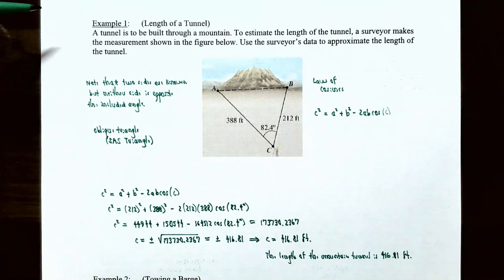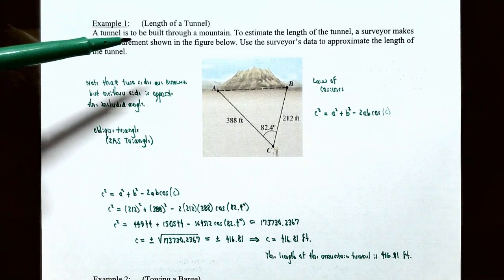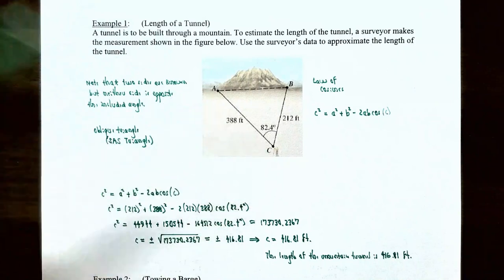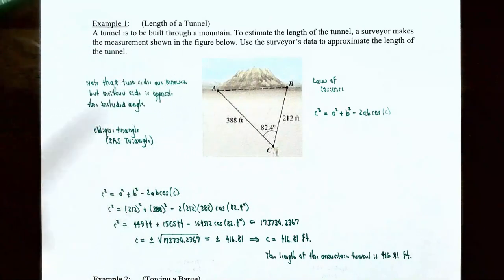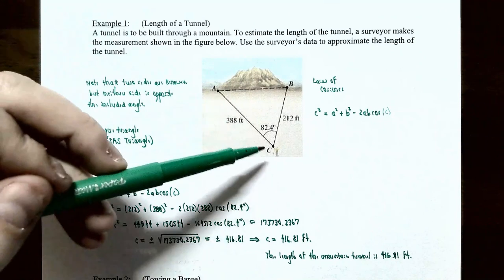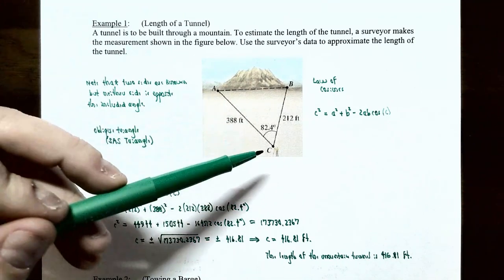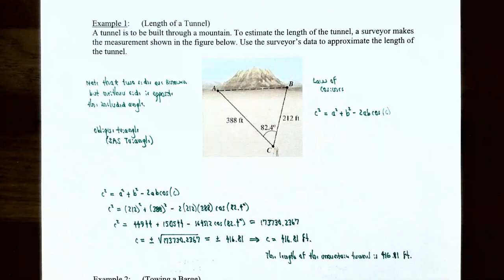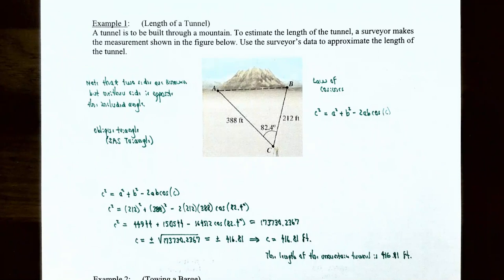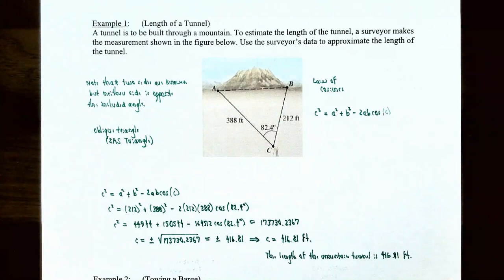Example one: length of a tunnel. A tunnel is to be built through a mountain. A surveyor at point C measures angle C as 82.4°, the distance from A to C as 388 feet, and the distance from C to B as 212 feet. We want to find side AB, the length of the tunnel. Since we have two known sides and an included angle but not the opposite side, this is an SAS triangle and we must use the law of cosines.